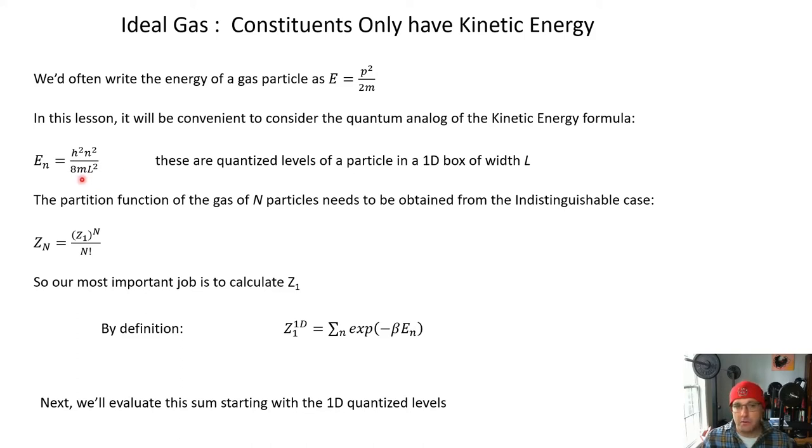If you've forgotten a little bit about this, there is an appendix in Schroeder. Again, it's also in a lot of modern physics texts. So the partition function of a gas of N particles has to be obtained from the indistinguishable formula Z_N = (Z_1)^N / N! because the constituents of a gas are real particles. They're either atoms or molecules or if you're a nuclear physicist, it's actually true that sometimes you will treat the nucleons in the nucleus as an ideal gas.